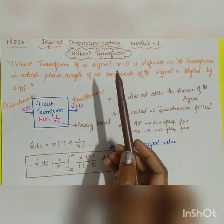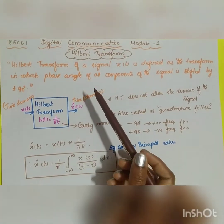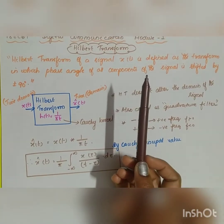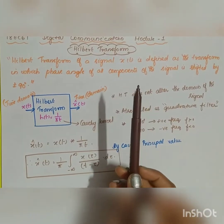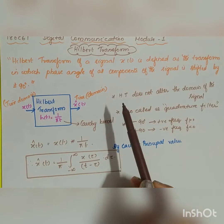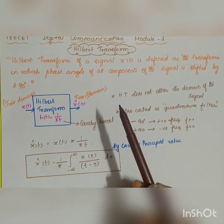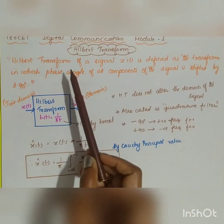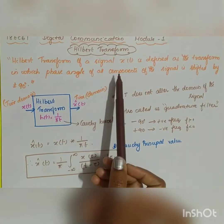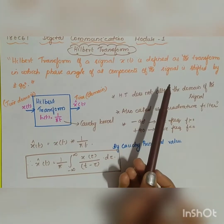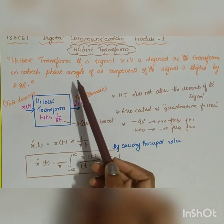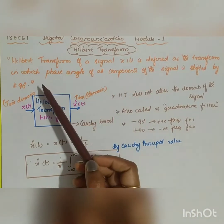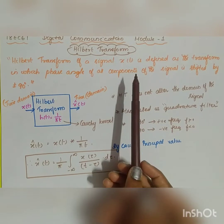The first topic in module 1 of digital communication is the Hilbert transform. Basically, the Hilbert transform imparts a phase shift of plus or minus 90 degrees to every frequency component of a function. We can define the Hilbert transform of a signal x(t) as a transform in which the phase angle of all components of the signal is shifted by plus or minus 90 degrees.